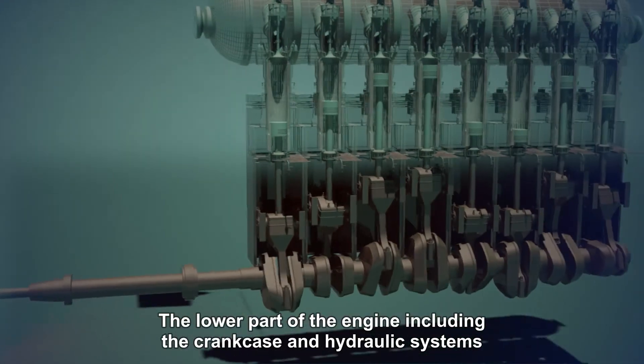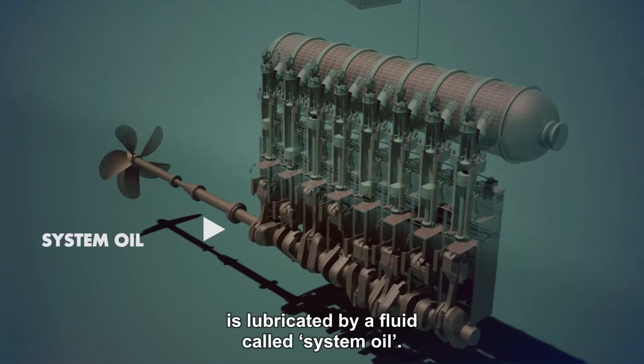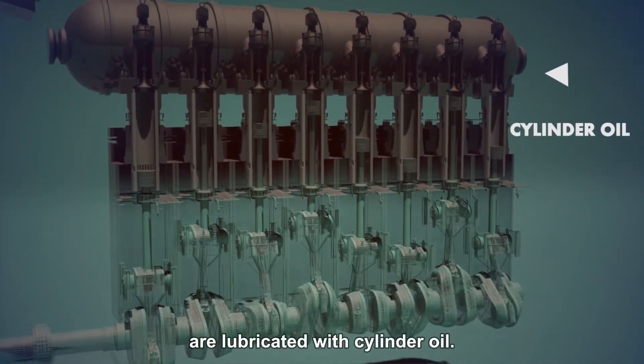The lower part of the engine, including the crankcase and hydraulic systems, is lubricated by a fluid called system oil. The cylinder units in the upper part of the engine are lubricated with cylinder oil.